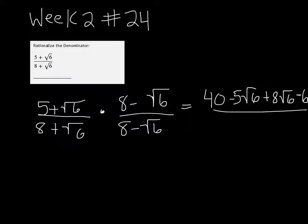Alright, in the bottom, we have 8 times 8, which is 64. And then we have a plus 8 root 6 and a minus 8 root 6, so those cancel. And then we have a minus square root of 36, which is just 6.